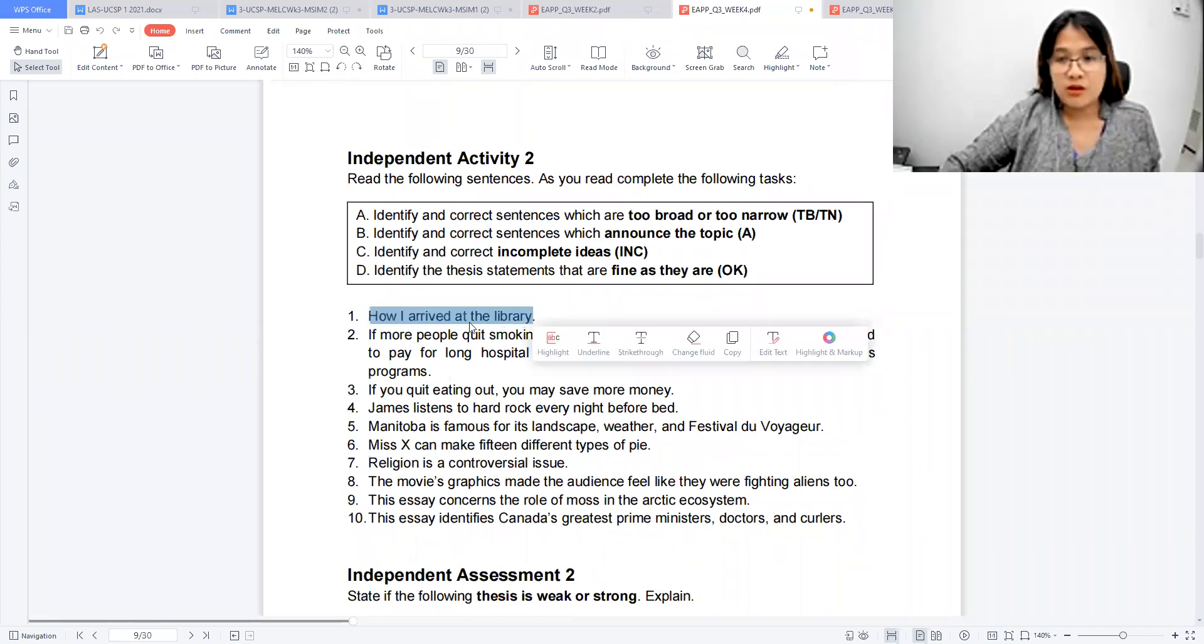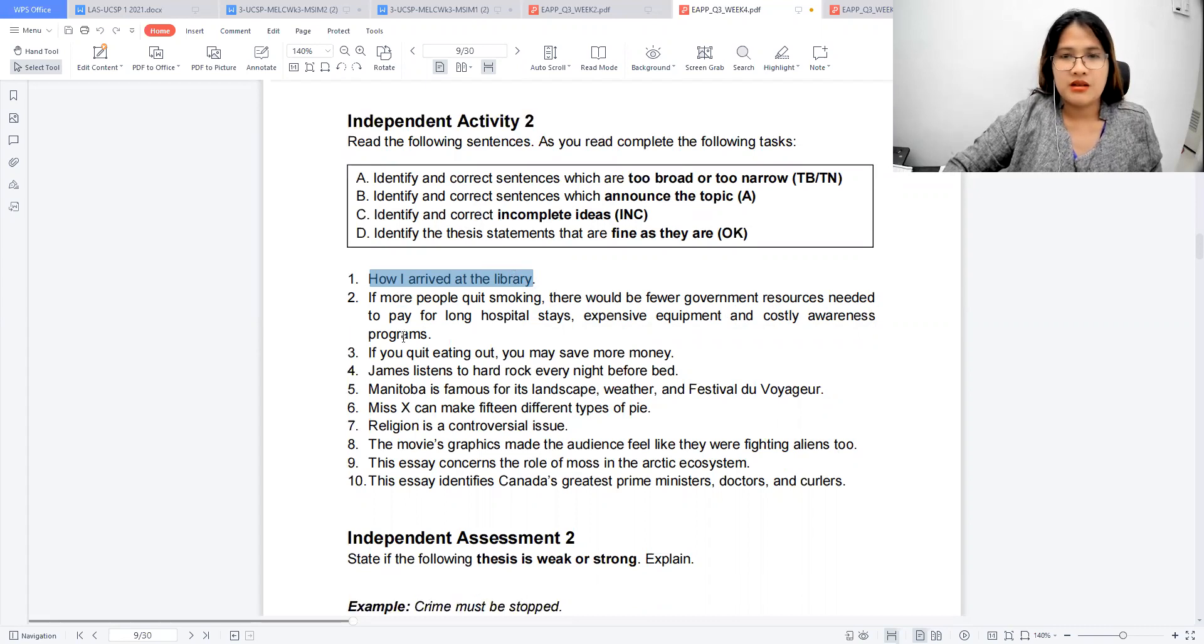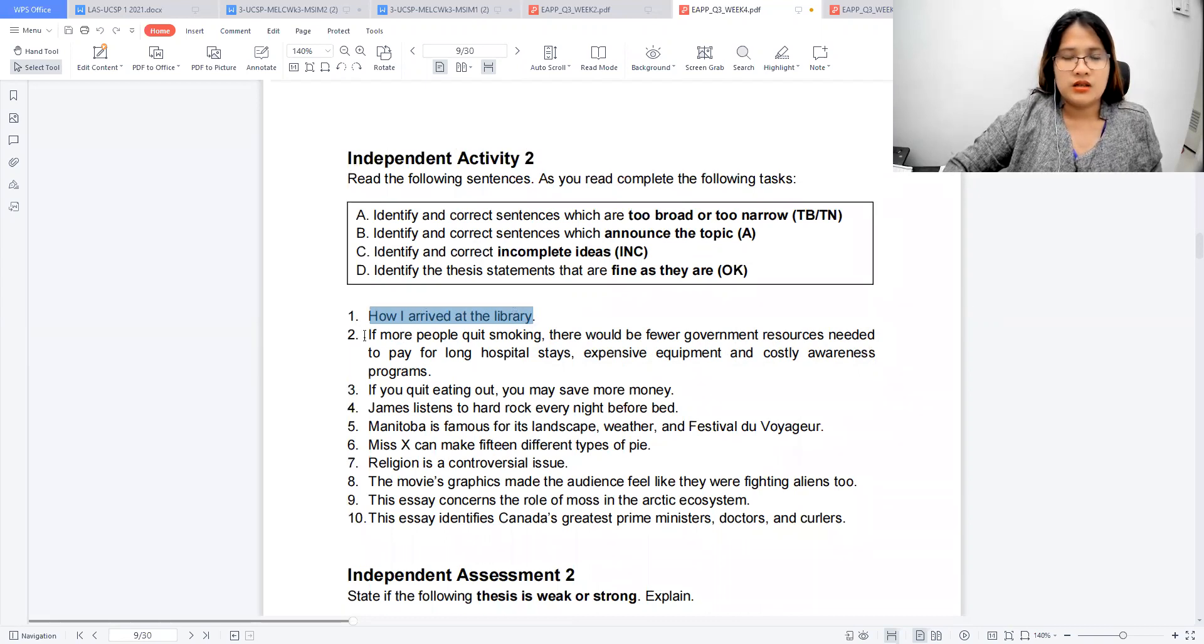So for the first one, how I arrived at the library. So definitely, so what about it? So yes, you arrived at the library. You're specific about the library, but it's incomplete. So what about it? So this makes number one incomplete. So it couldn't be a topic because it's too specific for a topic.